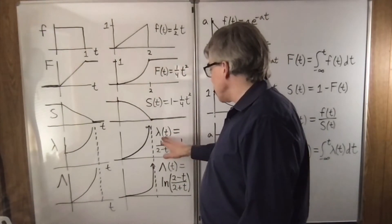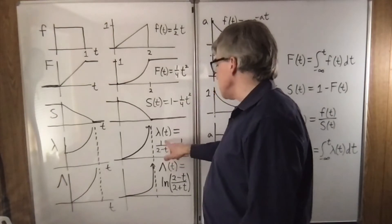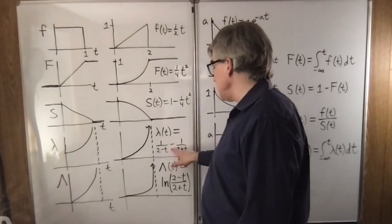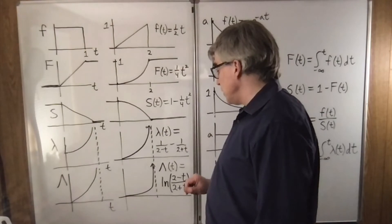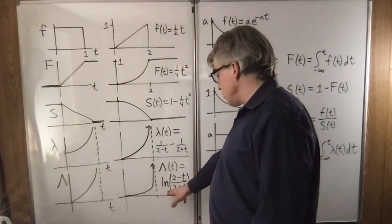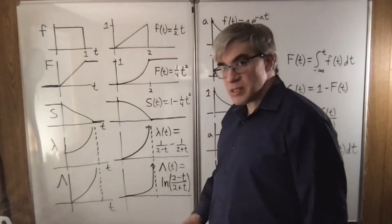And its function, after some algebra, simplifies to 1 over 2 minus T, minus 1 over 2 plus T. Big lambda turns out to be the natural log of 2 minus T over 2 plus T.